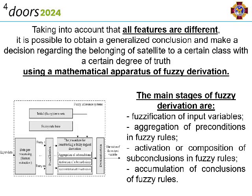The problem of data classification can be solved by the fuzzy inference system, which is based on the algorithm of obtaining fuzzy conclusions based on fuzzy premises using concepts of fuzzy logic. The process of fuzzy derivation combines the main concepts of fuzzy set theory: membership functions, linguistic variables, fuzzy logical operations, methods of fuzzy implication, and fuzzy composition.